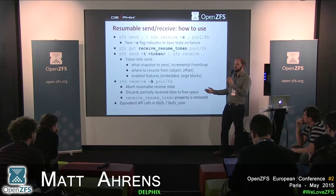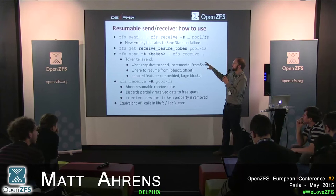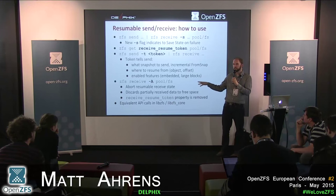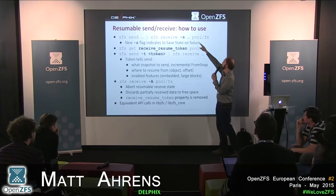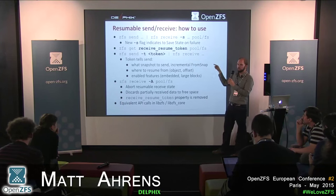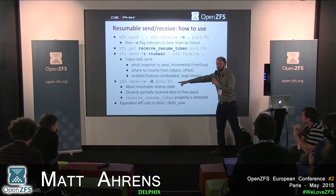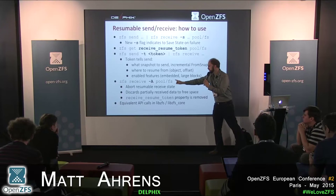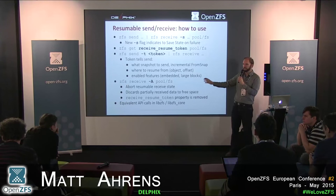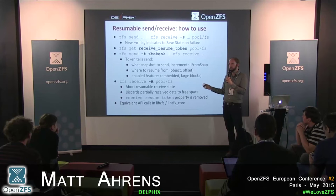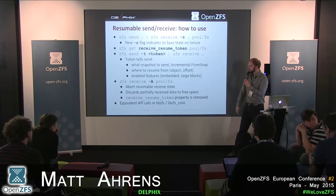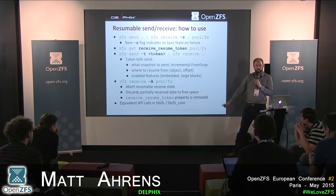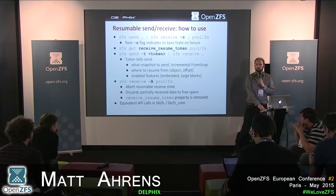When doing ZFS send -V with a token, it decodes and shows you what information the token encodes. Performance impact of receive -s is essentially none — it's the same as normal receive. The token writes out the object and offset once per transaction group, not per record, so there's no per-record write overhead. When the receiving system resumes, the object and offset accurately reflect what's safely on disk.